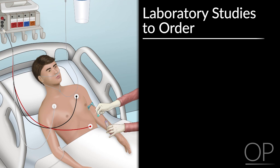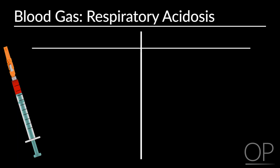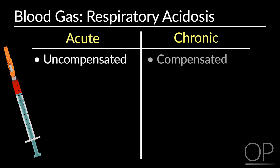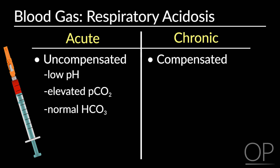Next, think about what lab studies you would like to order. You can start with a blood gas to evaluate for inadequate gas exchange. If this shows a respiratory acidosis, assess whether or not this is acute or chronic — in other words, uncompensated or compensated. In an acute respiratory acidosis, the pH will be reduced, the CO2 will be elevated, and the bicarb will be normal. In contrast, in a chronic respiratory acidosis, there is renal compensation, and therefore the pH will be low but will be closer to normal.